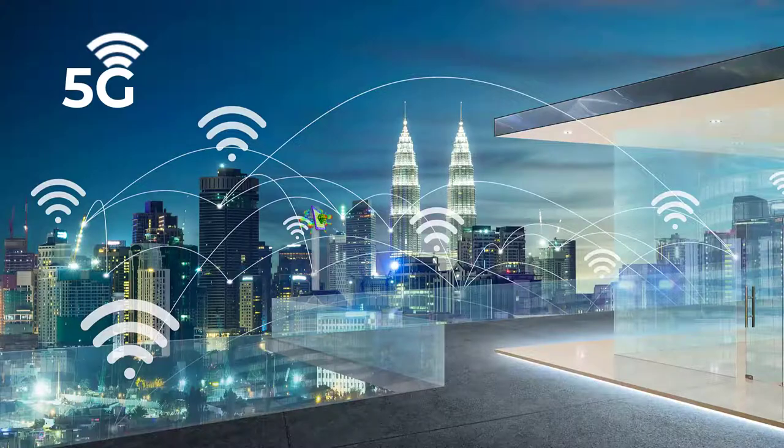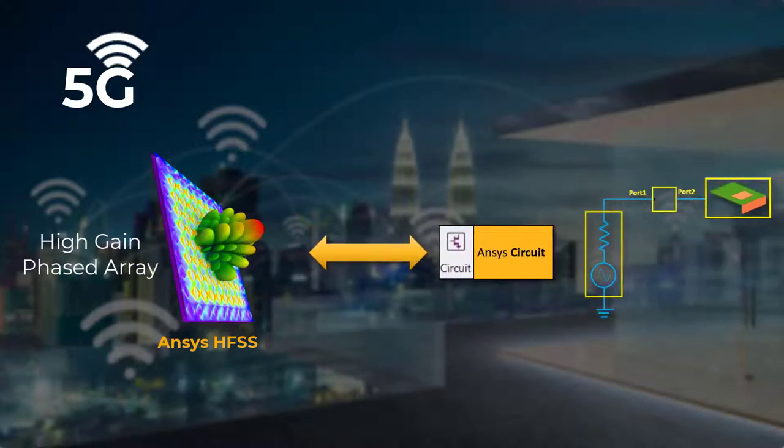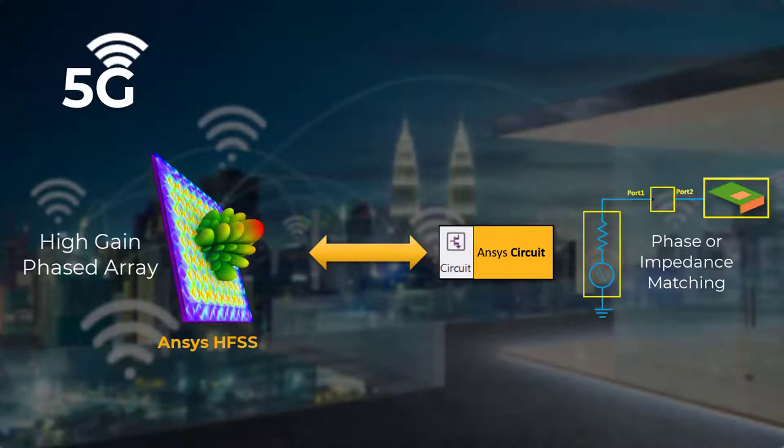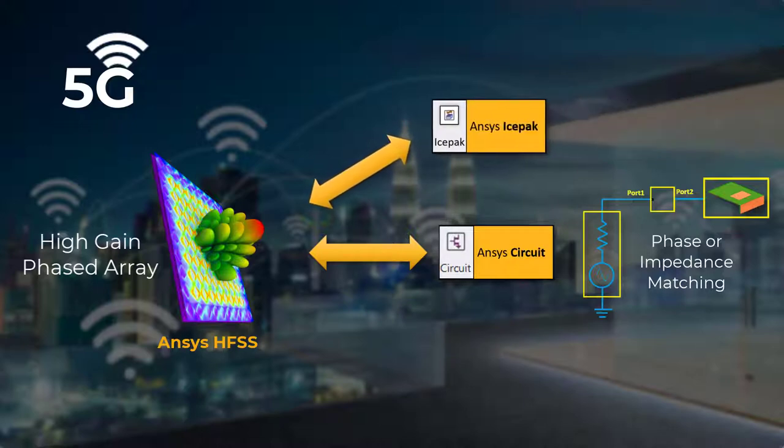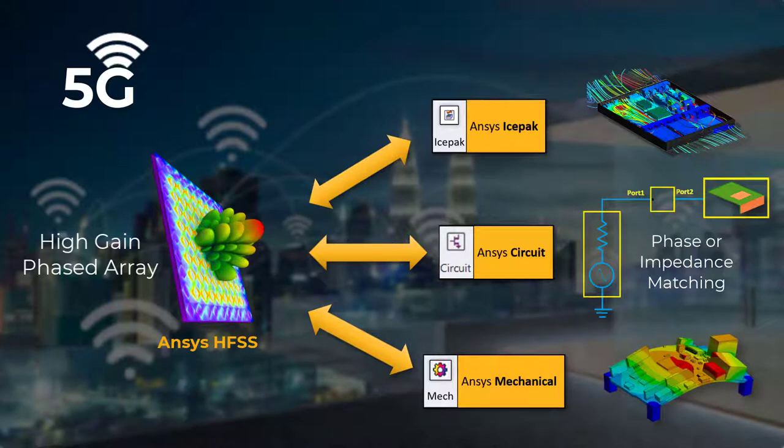Antennas for 5G require a high gain phased array. Electromagnetics is coupled with circuit simulation for phase matching or impedance matching, whether it's to the feed network or coupled to another signal trace, to maximize the gain. You may want to consider heat from other components or from the environment, which also impacts the antenna's performance. So adding a thermal or mechanical stress simulation may be required, and a dynamic link is needed here.